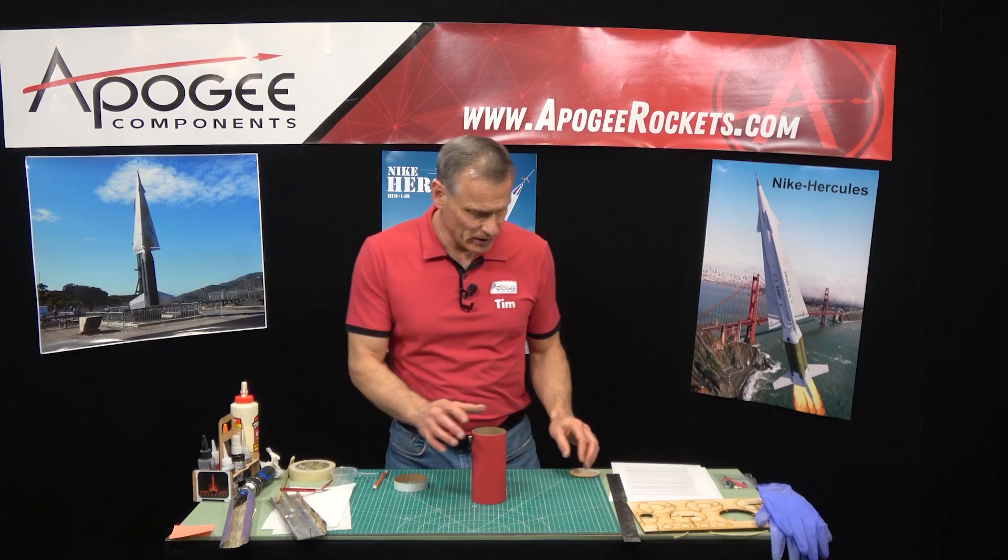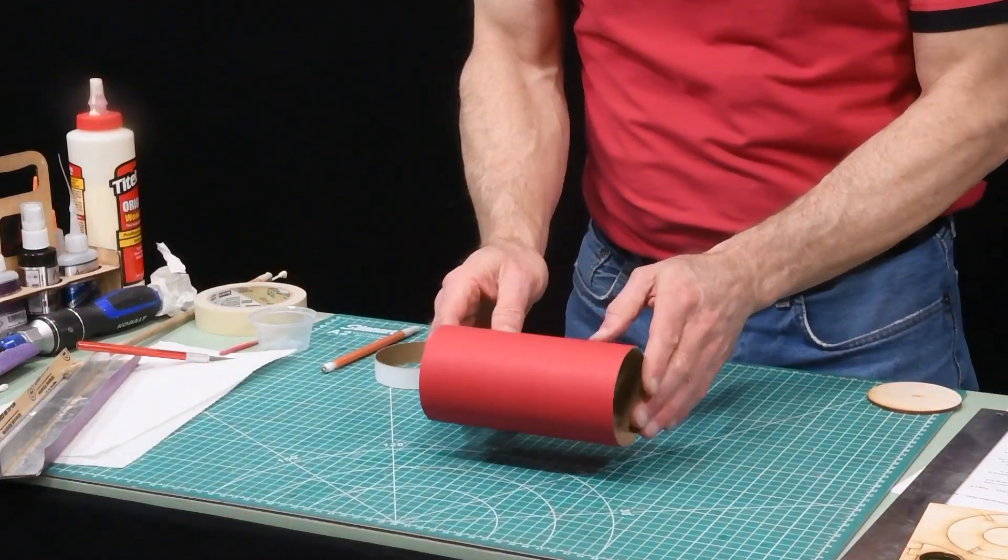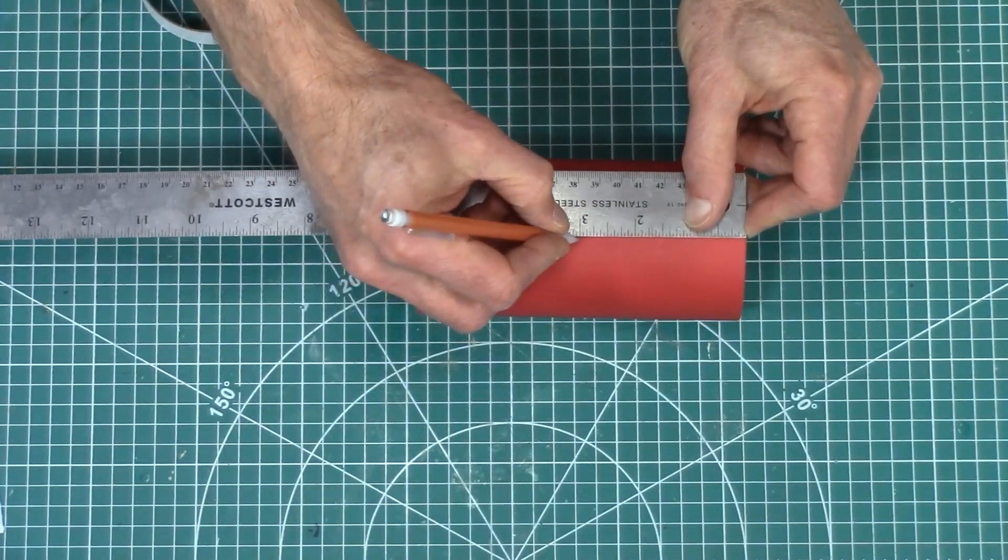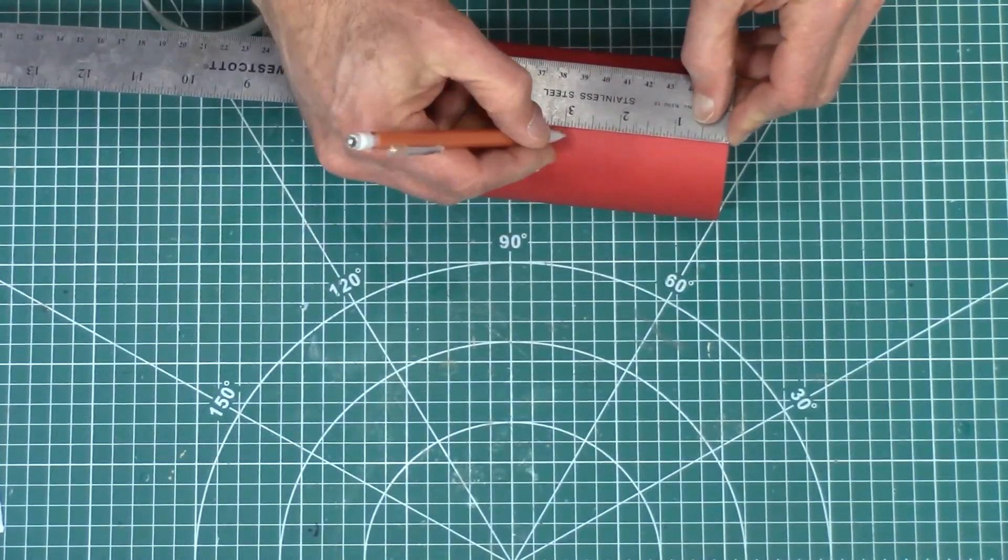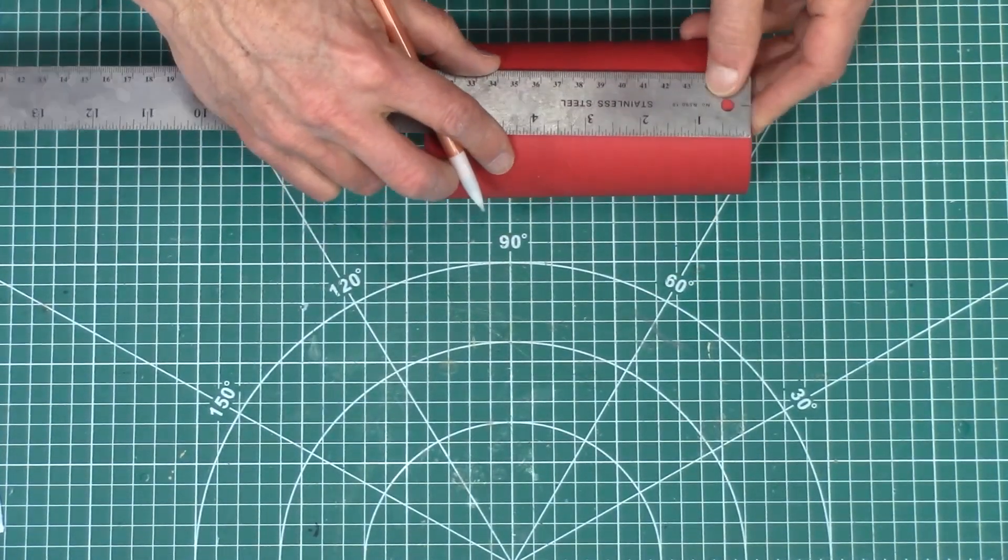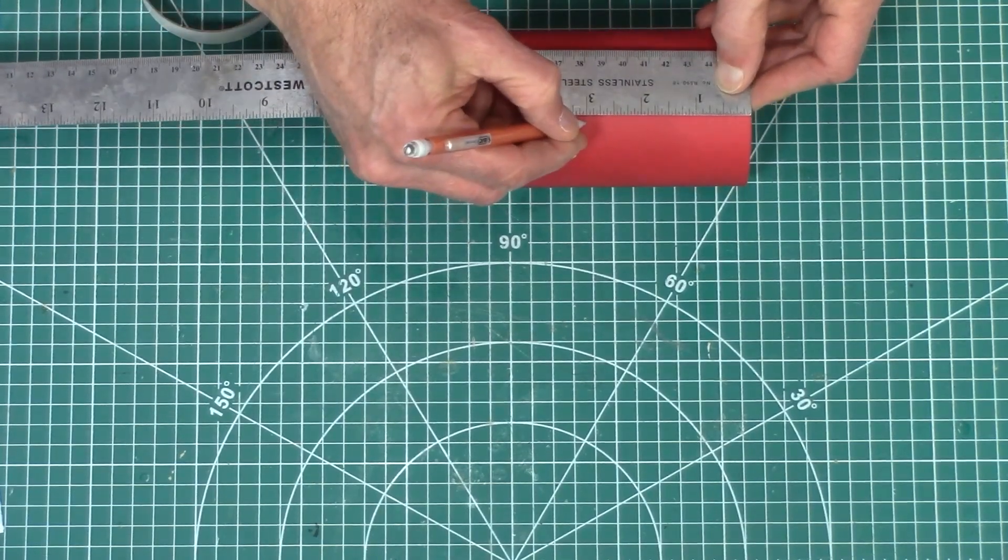Alright, we're on step 17. We're going to take this plain coupler and mark it at the three-inch point, which is exactly the middle. We want to do that several times around so that we get a nice straight line.